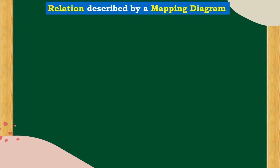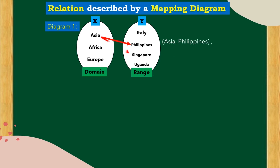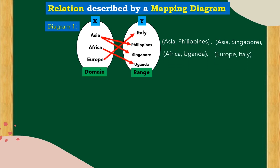Relation described by a mapping diagram. Diagram 1 has x-coordinates as the domain and y-coordinates as the range. Make an arrow to form the pairs: Asia-Philippines, Asia-Singapore, Africa-Uganda, Europe-Italy. This type of relation is a one-to-many correspondence, meaning one domain maps to many range values.